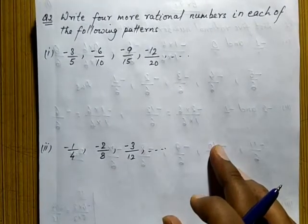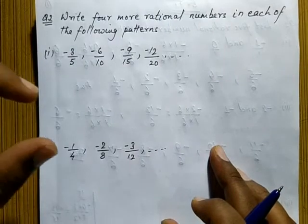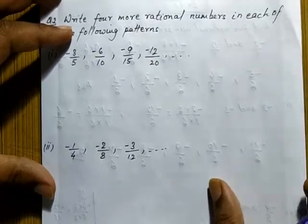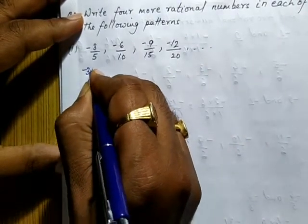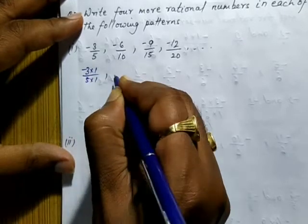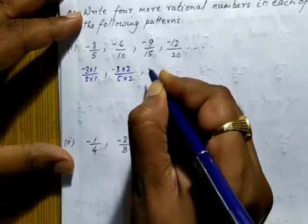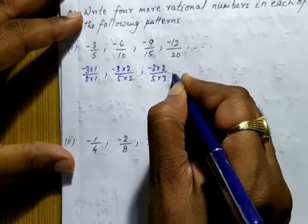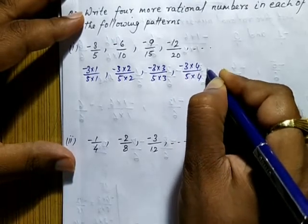The next question is: write four more rational numbers in each of the following patterns. You have to observe the patterns. The pattern is: minus three into one upon five into one, minus three into two upon five into two, minus three into three upon five into three, minus three into four upon five into four.